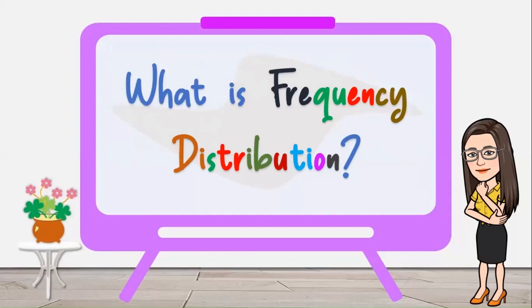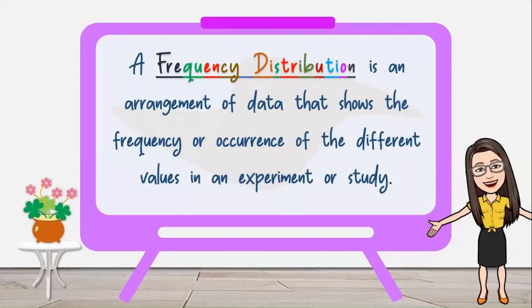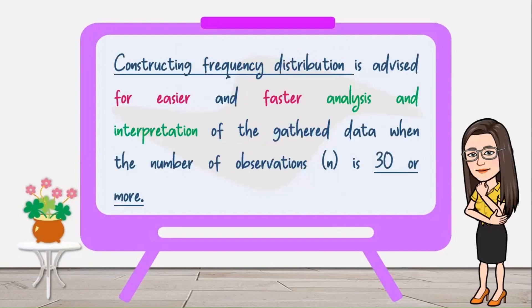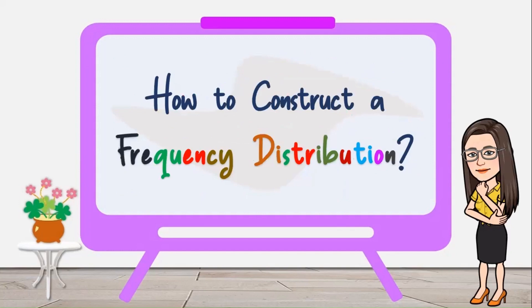What is a frequency distribution? A frequency distribution is an arrangement of data that shows the frequency or occurrence of the different values in an experiment or study. Why construct a frequency distribution? Constructing a frequency distribution is advised for easier and faster analysis and interpretation of the gathered data when the number of observations, represented by n, is 30 or more.